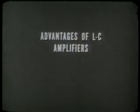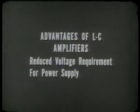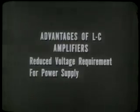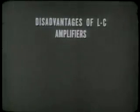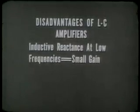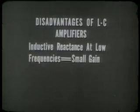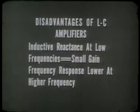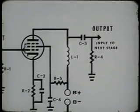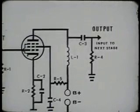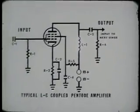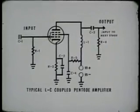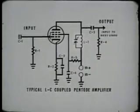LC amplifiers have one particular advantage: removal of the plate load resistor reduces the voltage required from the power supply. However, LC amplifiers have a disadvantage — due to the inductive reactance of the inductor at low frequencies, the gain is small. As the frequency is increased, the gain increases until the distributed capacitance of the circuit nullifies any further gain and frequency response drops off. Therefore, around the middle of the audio frequency range, the LC amplifier will give maximum gain. When it is desired to select one frequency out of the middle of the audio range, the inductor can be tuned by placing a capacitor across it, making the LC amplifier very selective.